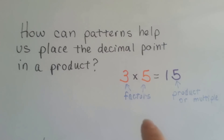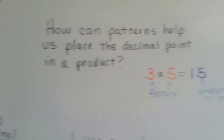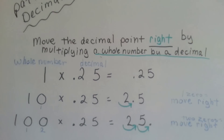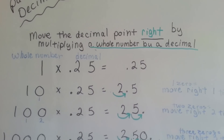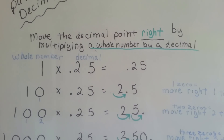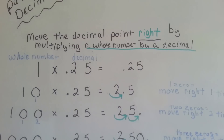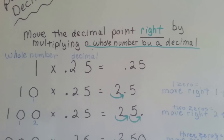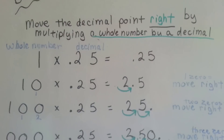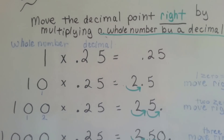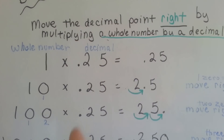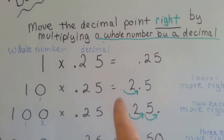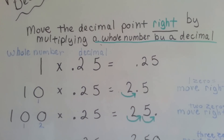Remember, this is the factor and that's the product — it's the answer. We can move the decimal point to the right by multiplying a whole number by a decimal. Notice that the whole number is written first and the decimal is written second. When the decimal is on the right-hand side, our answer is going to move to the right. See how the little arrows are going in that direction?